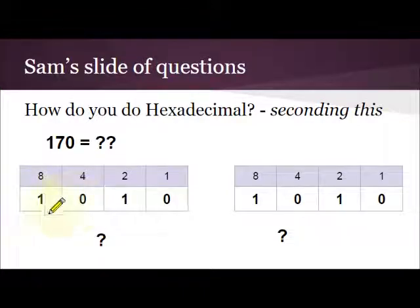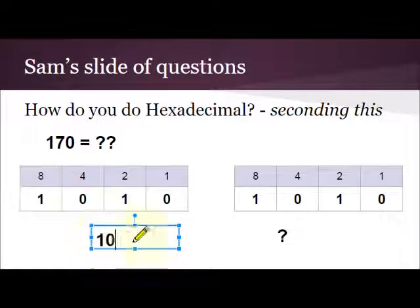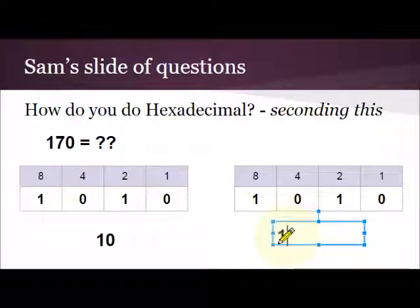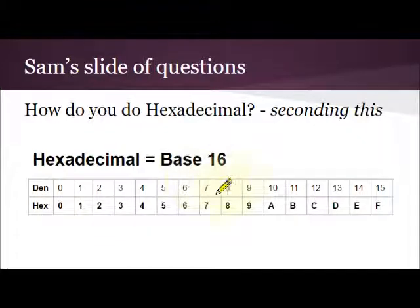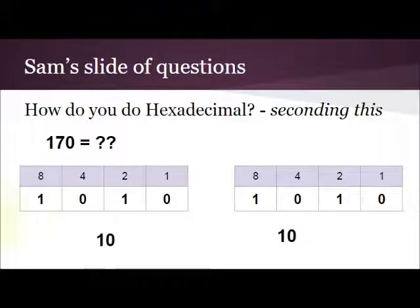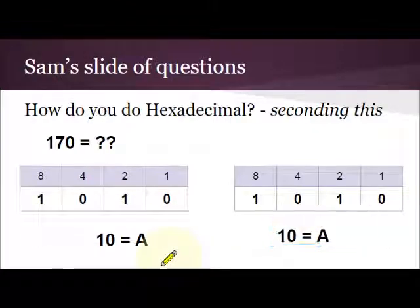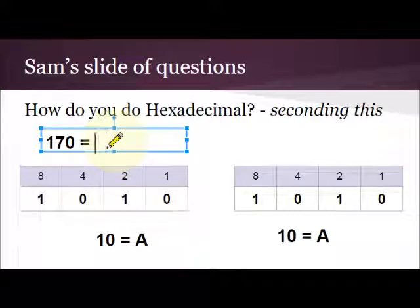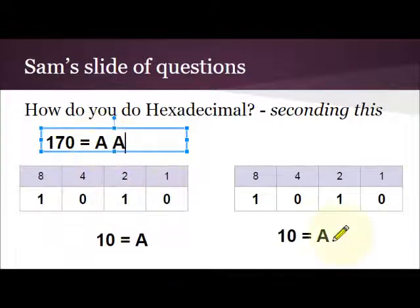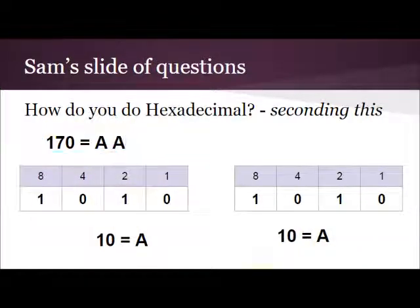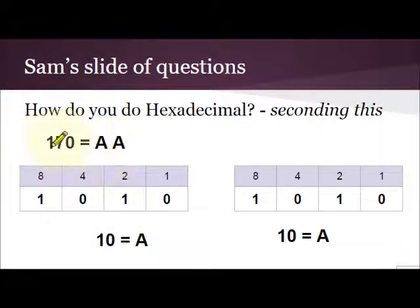Now we convert both of them. So here, 8 plus 2 — well, that's 10. And here, 8 plus 2 again — that's 10. Now, we know that 10 doesn't exist as a single digit in hexadecimal, so let's go back to the chart. We can see that 10 is actually A. So here, we know 10 is A, and 10 again is A. That means that our 170 in hexadecimal is AA — this first nibble becomes A and this second one becomes A. So we know 170 in hexadecimal is AA. And you can see that we are saving 170, which is three digits, into a smaller version which is only two.